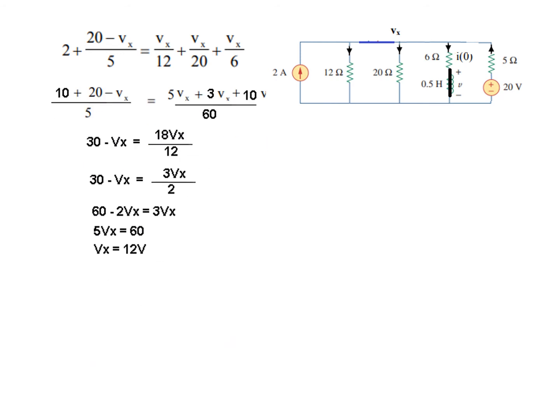So this is the current leaving. Solving, we find Vx first. I have done all these steps; you can just go through them. The final answer we get is Vx equals 12. Now I(0) is Vx over 6, which equals 12 over 6, that is 2 amperes. So we have found the first parameter.